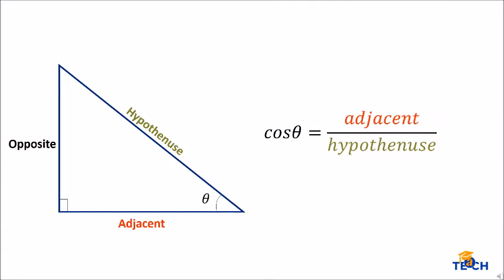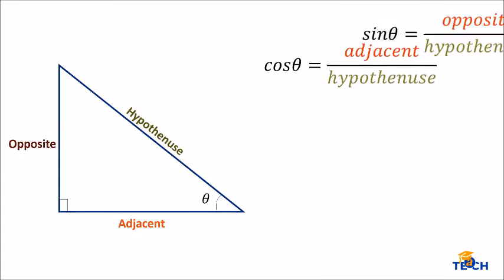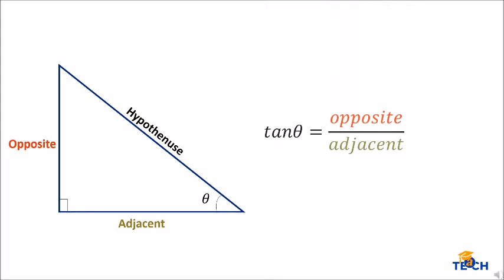Next, cosine theta is equal to the adjacent side over the hypotenuse side. And for tangent theta, we have opposite over adjacent. You can refer to the figure on the left side.